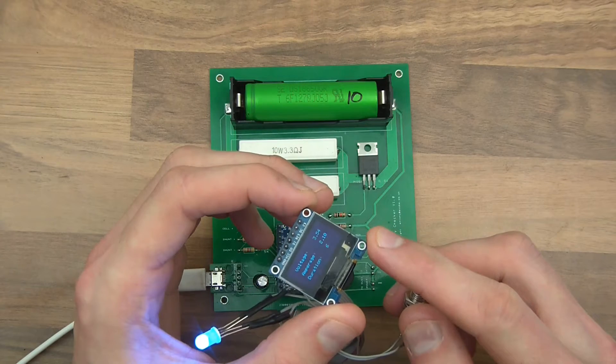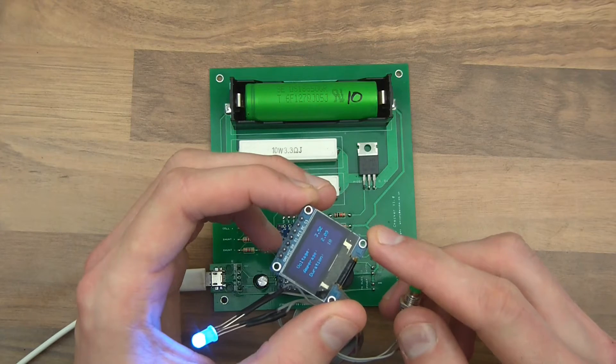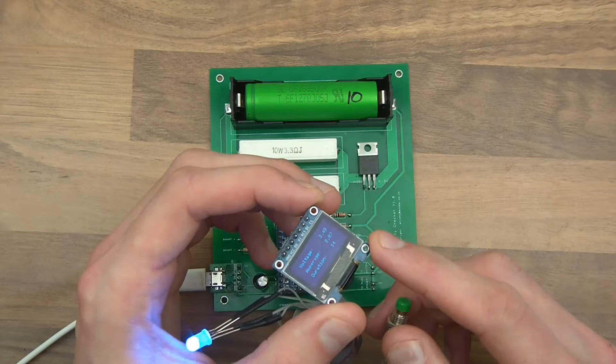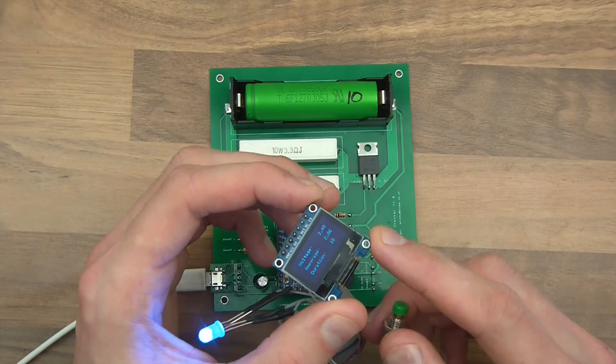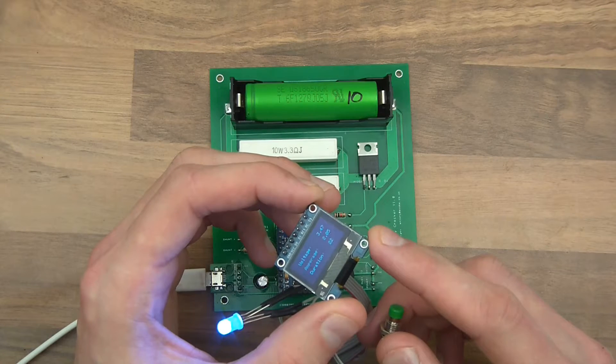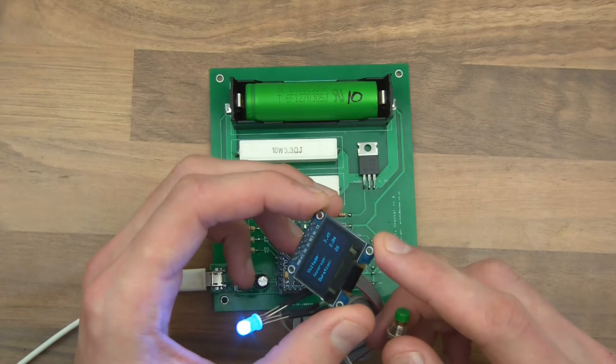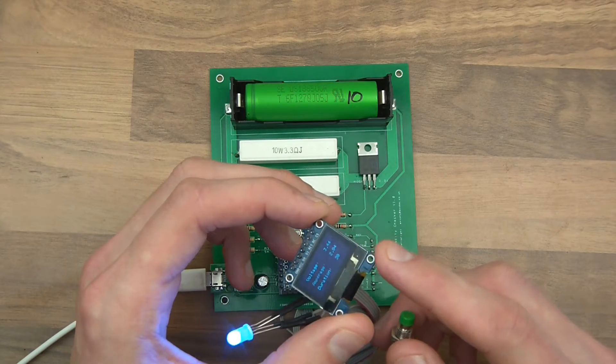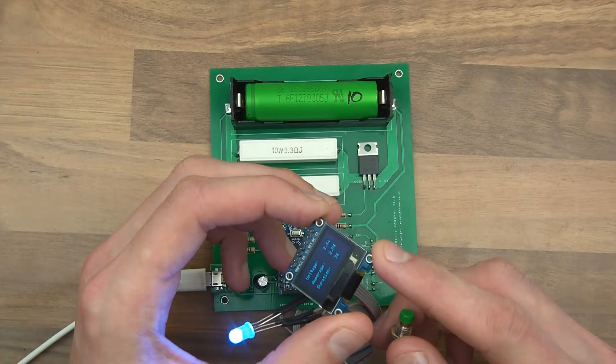So straight away the voltage has dropped from 3.94 to 3.5 and that's because I've put a heavy load on it. Really I'm not sure if I'm doing this the correct way because when you put a load on something like that you get voltage sag, and should we be measuring capacity including voltage sag? I'm not sure if we should be.